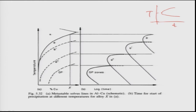These TTT-like curves allow selection of heat treatment cycles. A double-treatment can first produce large numbers of GP zones at low temperature, then higher temperature aging forms theta double prime on existing GP zones. In practice, some treatments use three stages to obtain combinations of GP zones, theta double prime, and theta prime simultaneously, achieving the optimum hardness.